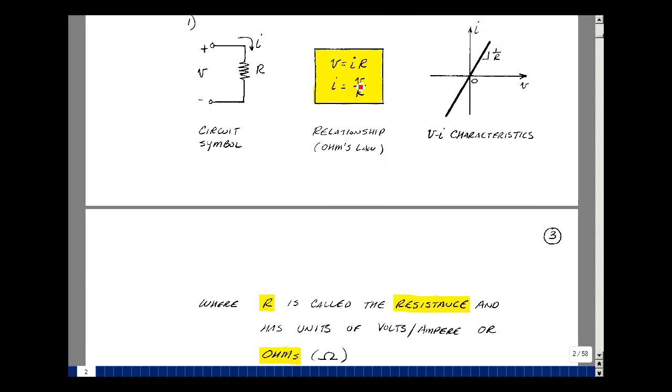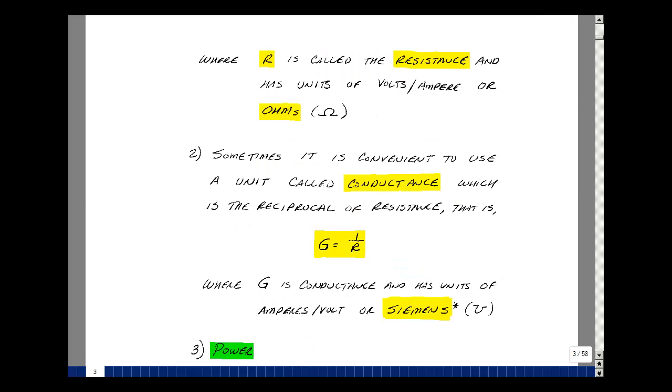We can see from our equation here the units of resistance would be voltage divided by current, so volts per amp. Many of these were renamed for the person who discovered the relationships. In this case, it was Ohm, and so we call this a unit of Ohm or Ohms.